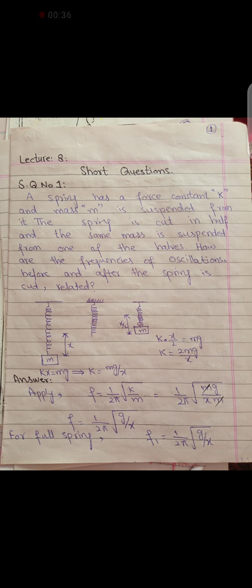This is the full spring and this is the halved spring. The displacement will be X by 2 for the half spring. Before we find the spring constant K, K is equal to Mg over X. For the half spring, K is equal to 2Mg over X.